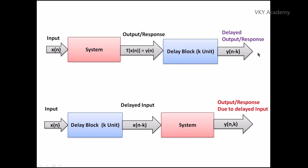To test time invariance, y(n, k) — the response due to the delayed input — must be equal to y(n − k), the delayed output. To summarize the process: first, supply the input signal to the system to produce the output, then give the output to the delay block to produce the delayed output. Second, supply the input to the delay block to produce the delayed input, then supply the delayed input to the system to produce y(n, k). If both are equal, the system is time invariant. In the upcoming lecture we will understand the concept with some examples.